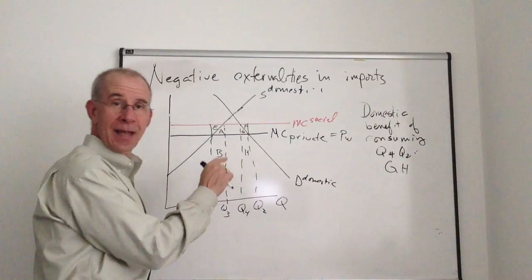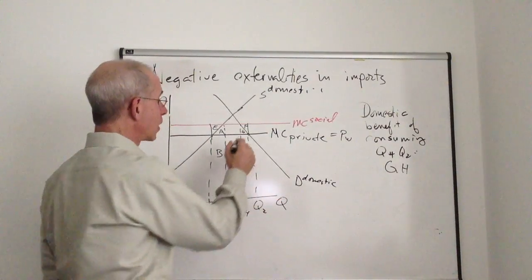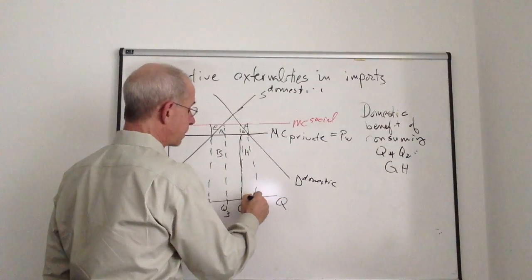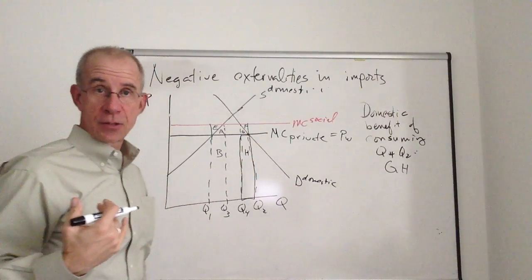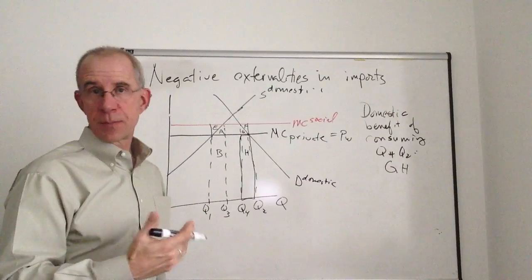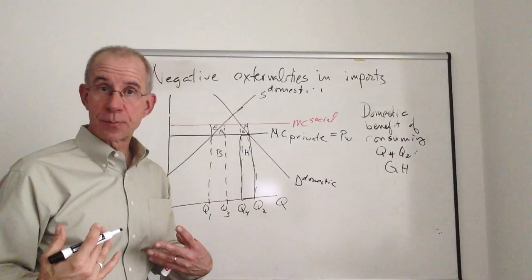They only had to pay H in the private market. This box here. So they figure, hey, I'm getting G, H in benefits. It's only costing me H. It's worth it to import these products.